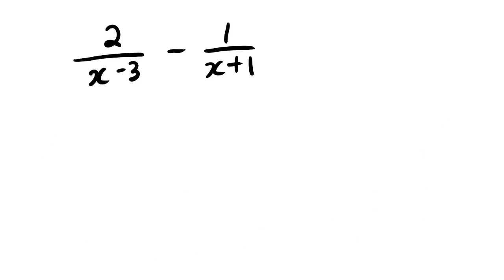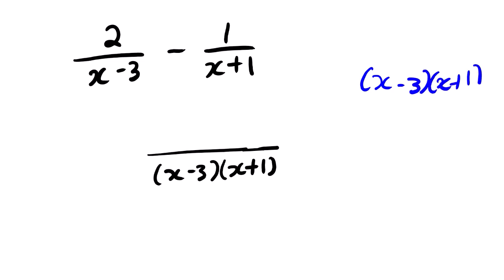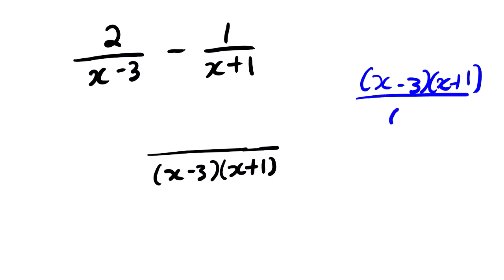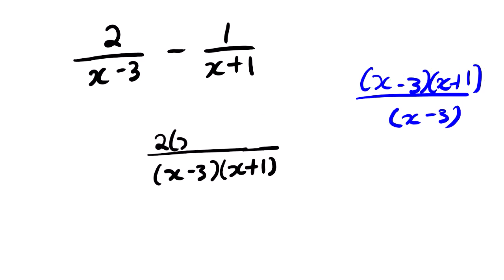Suppose we have these two fractions and we want to simplify them. We look at the lowest common denominator, which is (x - 3)(x + 1). We simply multiply the two denominators, then look at the first fraction. Taking our LCD, we divide the denominator of the first fraction by the LCD. This gets rid of that term and we are left with x + 1, which multiplies to give 2x(x + 1).